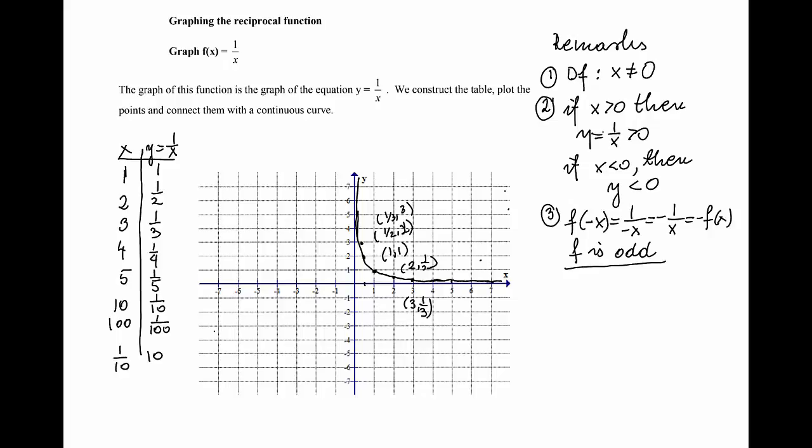Now using symmetry with respect to origin, I will get the point (-1, -1), (-1/2, -2), (-1/3, -3), (-2, -1/2), (-3, -1/3). The graph is going to be symmetric with respect to origin. Because of that, when x is closer to 0, the graph approaches the y-axis. And when x is large but negative, the graph will approach the x-axis.